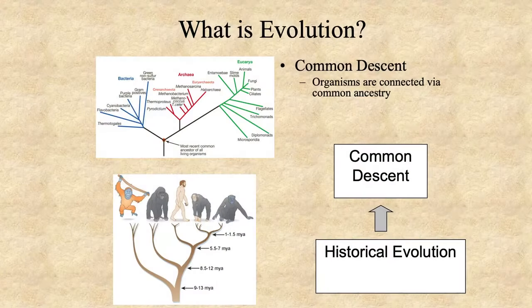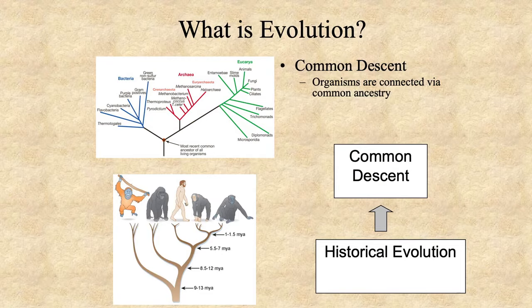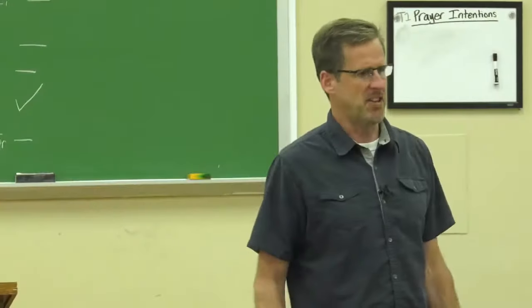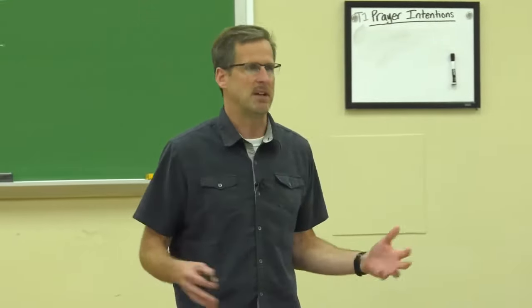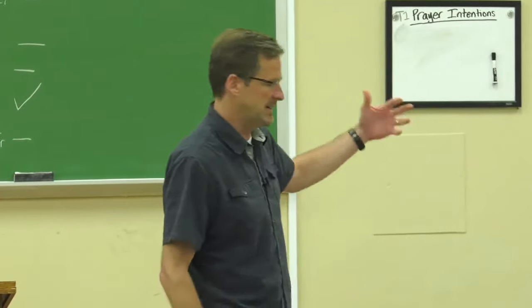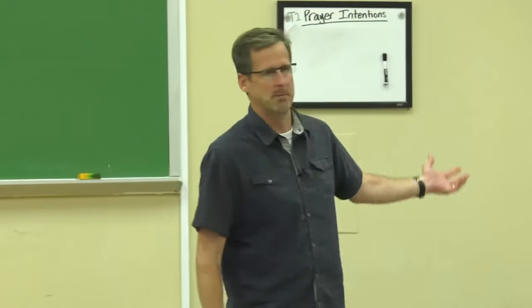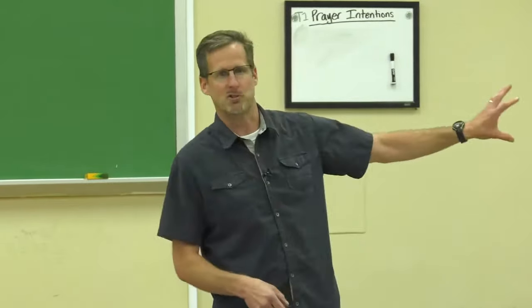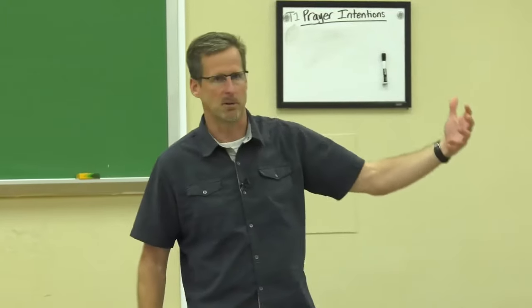The second level is common descent. This is the idea that all organisms are connected via common ancestry. At this level, you're not explaining how these common ancestors can be explained. You're saying that they're all related by common descent. There's another set of evidence that you would have to assemble to make this point. It requires historical evolution to be supported. So common descent depends upon historical evolution being correct.